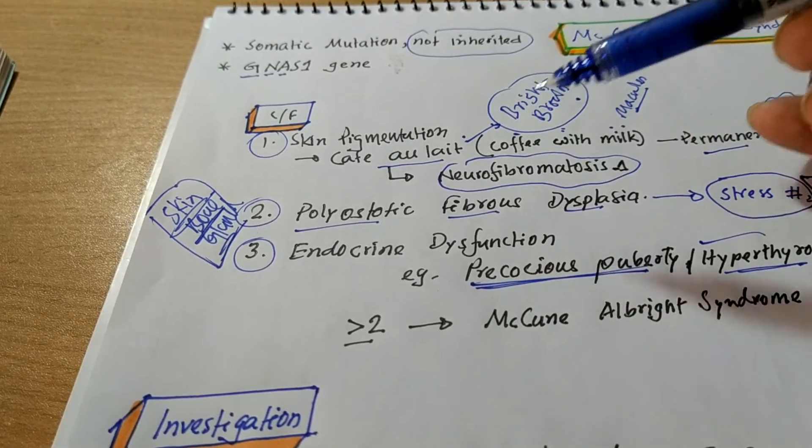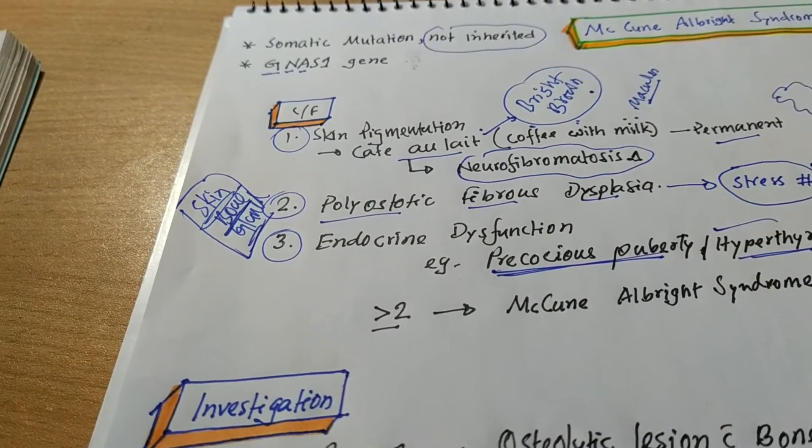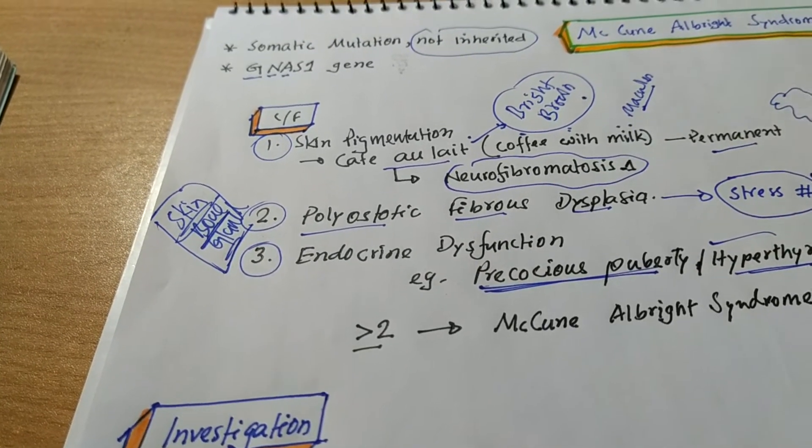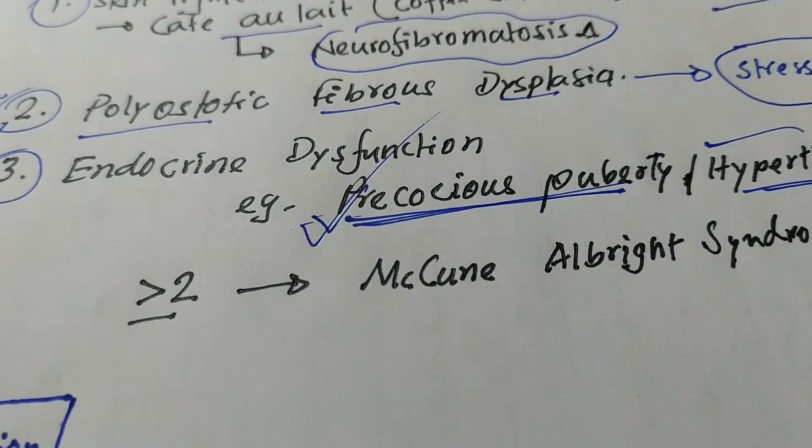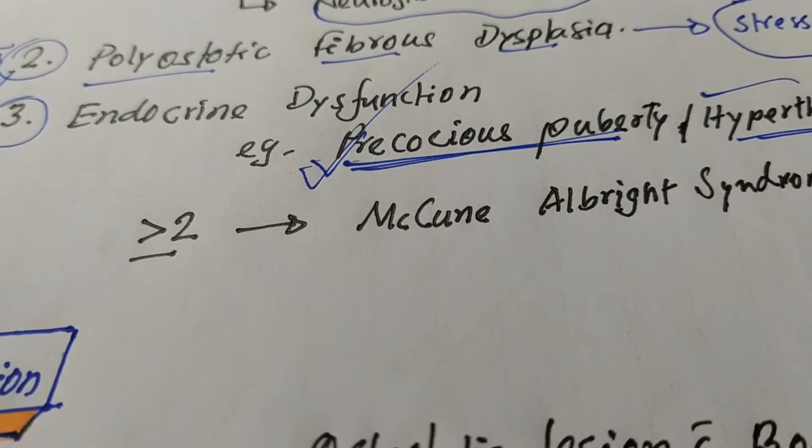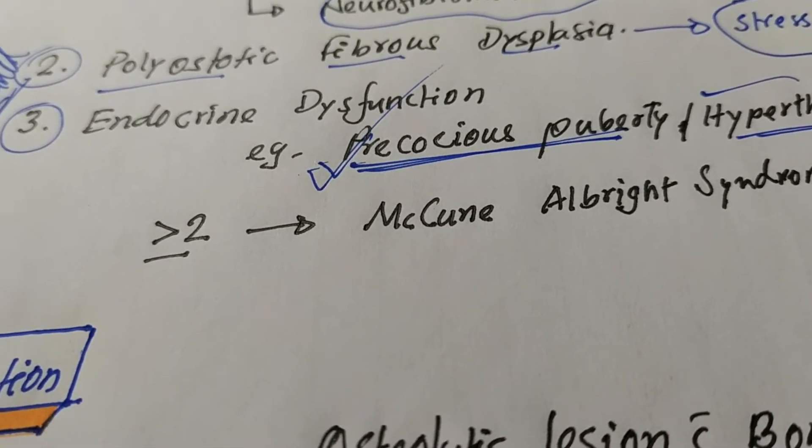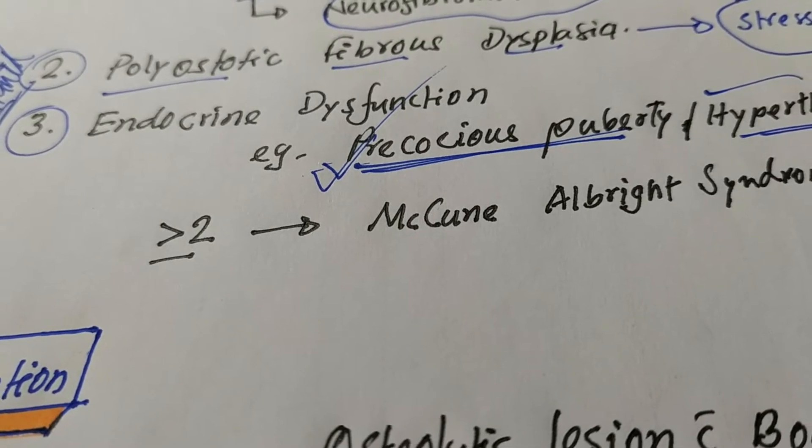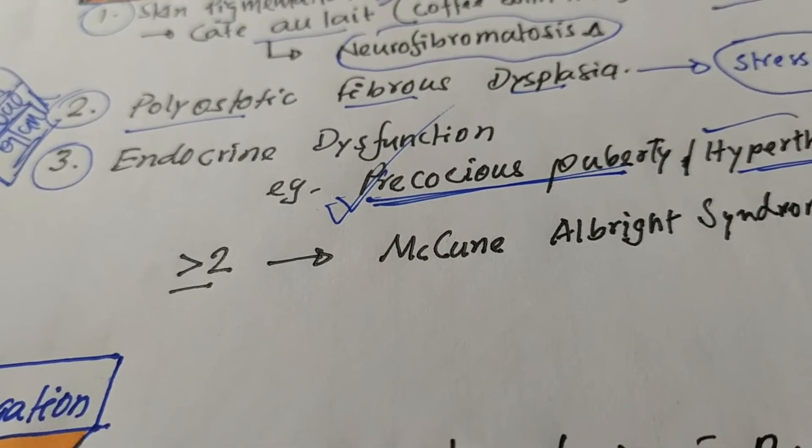So number three manifestation of this disease is endocrine dysfunction. The most important endocrine dysfunction with which the patient presents is precocious puberty. What do you mean by precocious puberty? Precocious puberty is the puberty which occurs unusually earlier, where it should not be. Suppose the puberty occurs in a girl or a boy before 10 years. So it is precocious puberty.